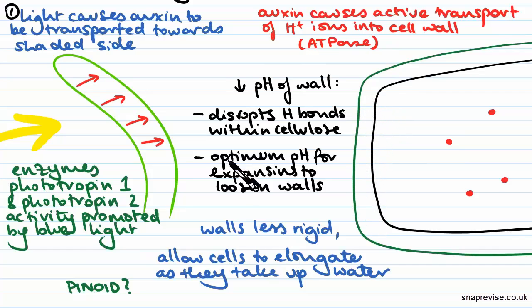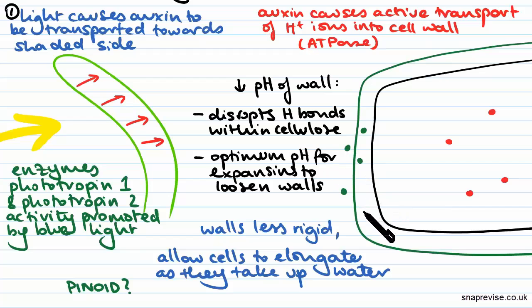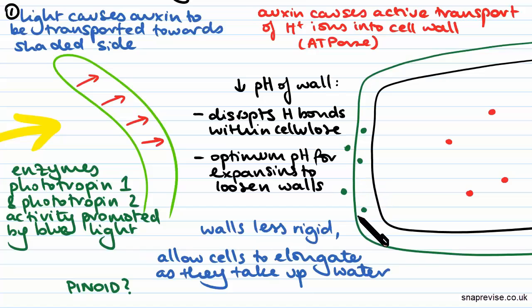It also starts to create a much better environment for the enzyme expansin, so it can start to loosen the cellulose in the cell wall by digesting it slightly. All in all, your cell wall becomes less rigid.